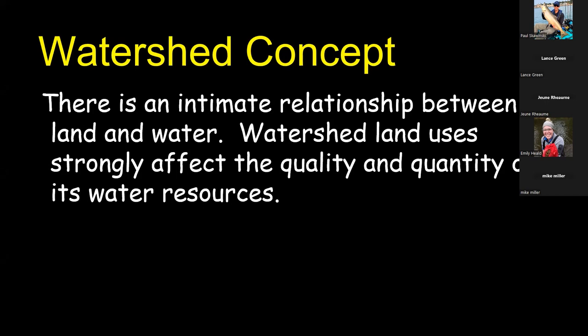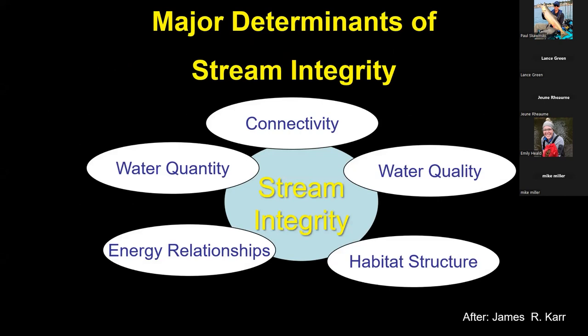What we do on the landscape has profound effects on the quality of our surface waters. Here's a conceptual model of stream integrity — what affects the health of our streams. When I'm studying a stream and its watershed, there are five determinants of stream health I think about. I'm going to go through each one individually and recognize that each determinant is strongly influenced by what we do on the landscape.